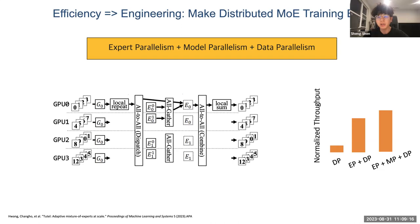Expert parallelism will allow for specialized allocation of each expert, and model parallelism will facilitate division of the model across multiple devices. Combining these two strategies can give you better throughput in a more practical solution.